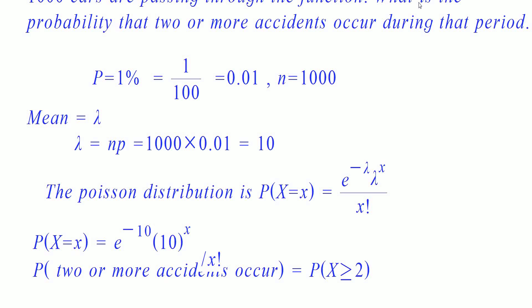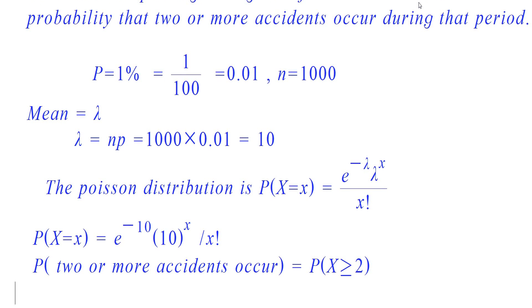Probability of X greater or equal to 2 means we need to find the probability of X equals 2 plus X equals 3 plus X equals 4, and so on. But this procedure will be tedious. Hence, we prefer another method.